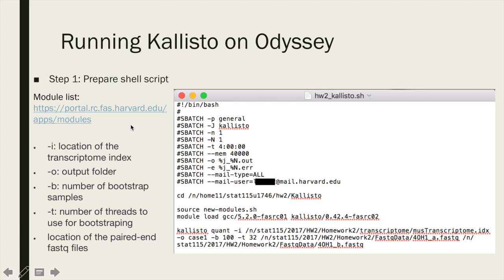To run CLISTO, you first call the CLISTO quant function, which quantifies abundances of the transcripts in the RNA-seq data. In the quant function, you can specify: dash i, the location of the transcriptome index; dash o, the CLISTO output folder for each dataset; dash b, the number of bootstrap samples — the standard is 100, but you can try different bootstrap numbers depending on your dataset; dash t, which specifies the number of threads to use for bootstrapping; and finally, the location of the two paired-end FASTQ files.